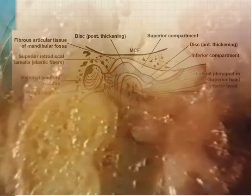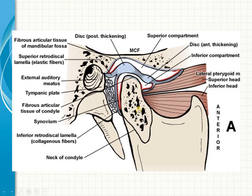The TMJ consists not only of the articular disc and bone but also involves muscles. The lateral pterygoid incorporates itself along with the disc. Apart from this, the temporalis, masseter, and medial pterygoid also regulate the movement of this joint.